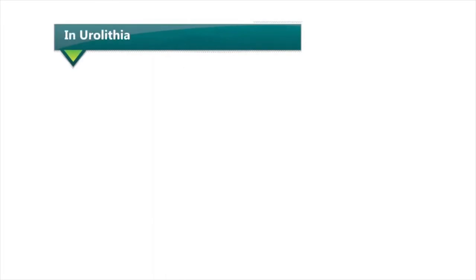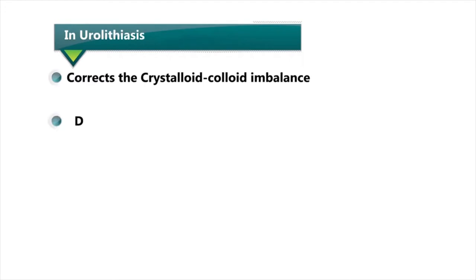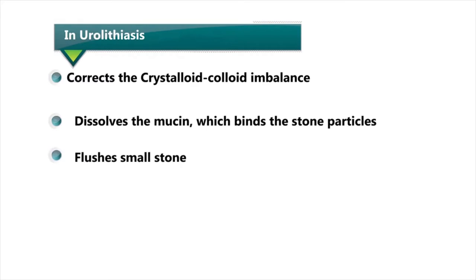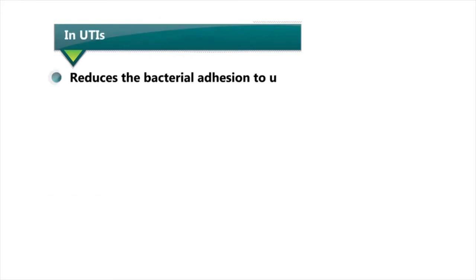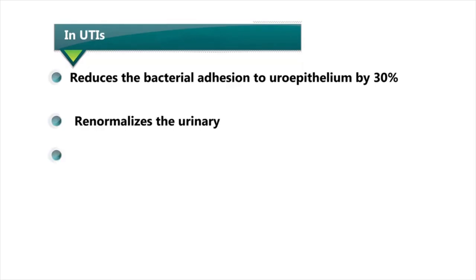In short, Cystone corrects the crystalloid-colloid imbalance, dissolves the mucin which binds the stone particles, flushes small stones and gravel, relieves renal colic, and prevents post-lithotripsy recurrence. In UTI, it reduces bacterial adhesion to uroepithelium by 30%, renormalizes the urinary pH, and offers dosage convenience.